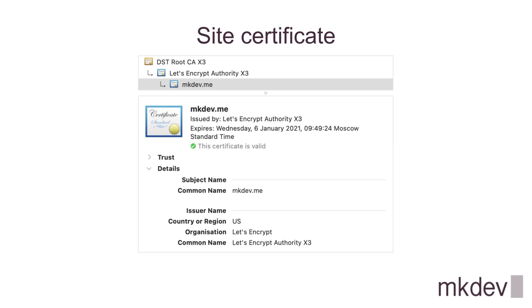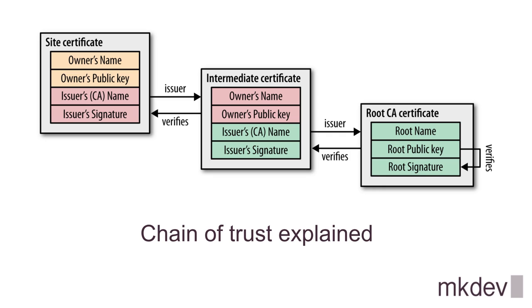At the bottom level there are leaf certificates, to which the site certificate belongs, and their signature can be verified via the public key from the intermediate certificate. So, to be able to verify this chain of trust, the client should be provided with all the chain except the root CA, which is already present on the client's operating system. Each certificate has a unique ID to navigate all possible chains. The client is able to validate the certificate by checking signatures from the bottom up until it reaches the root CA certificate that is trusted by definition.